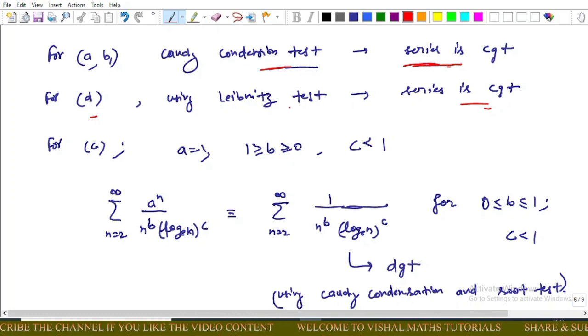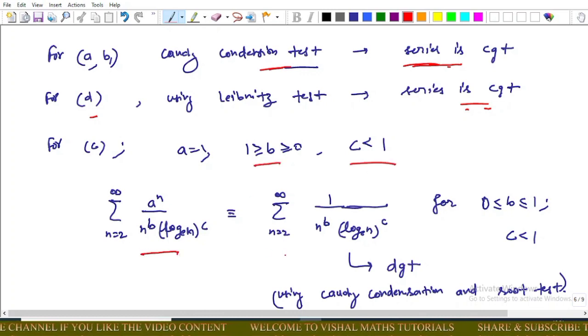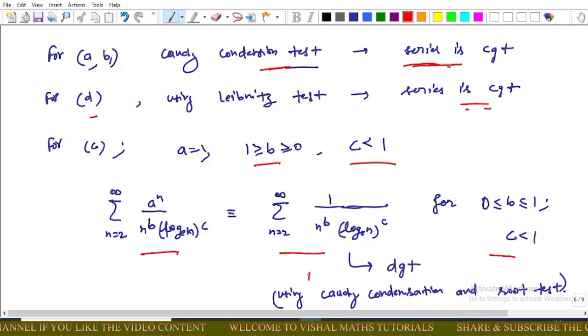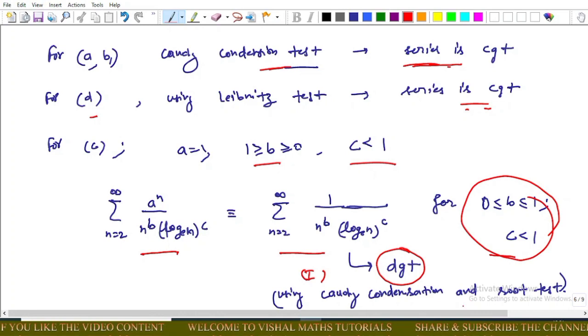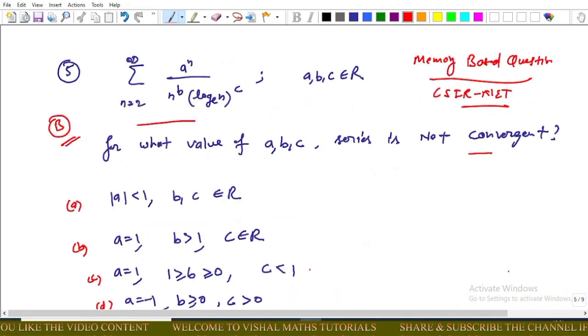For option C, that is a equals 1 and b and c less than 1, our given series reduces to this form. And now using firstly Kochi condensation test and secondly Kochi root test, this series is divergent for this interval. This implies that option B and B are incorrect, option D incorrect, and option C is correct.